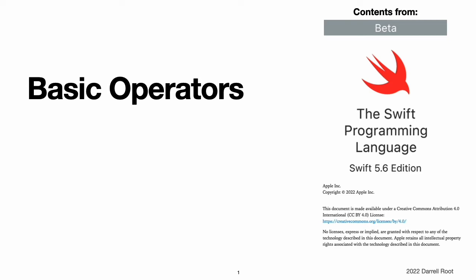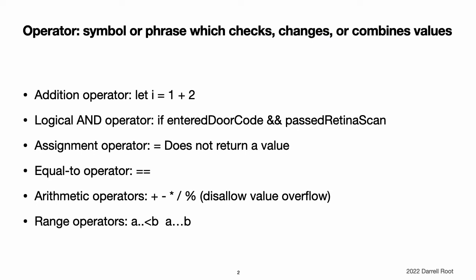Basic Operators. An operator is a special symbol or phrase that you use to check, change, or combine values. For example, the addition operator adds two numbers, as in let i equals 1 plus 2. And the logical AND operator combines two Boolean values, as in if entered door code AND passed retina scan. Swift supports the operators you may already know from languages like C and improves several capabilities to eliminate common coding errors.